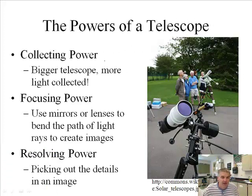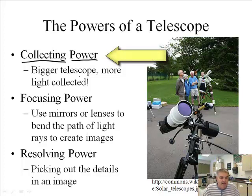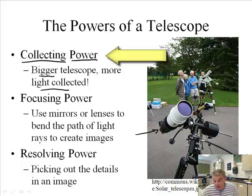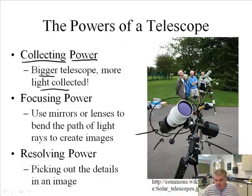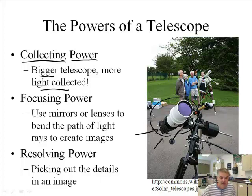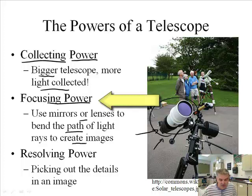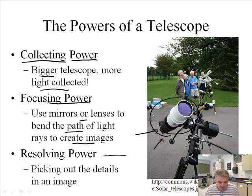The powers of a telescope — let's talk about that. There's something called the collecting power. The bigger the telescope, the more light you collect. Here we have a home telescope, but the size of how much light it can collect is essentially as big as its mirror. We can get much larger ones. The focusing power uses mirrors or lenses to bend the path of light and create images. And then lastly there's something called the resolving power.